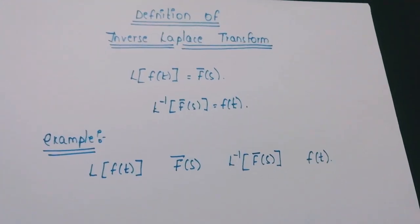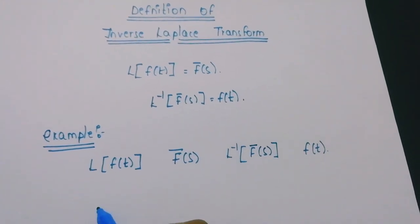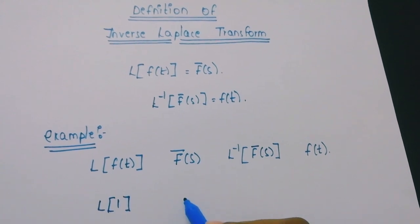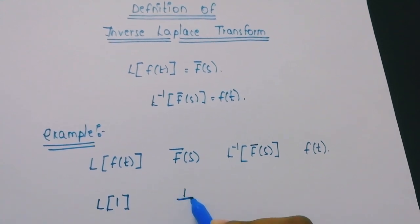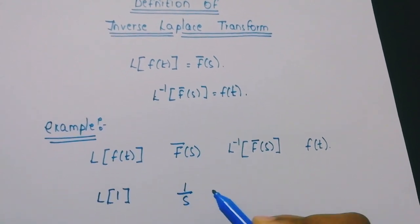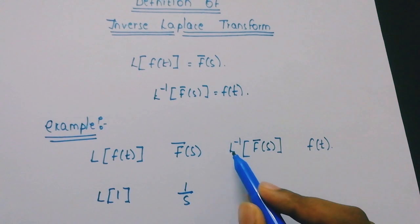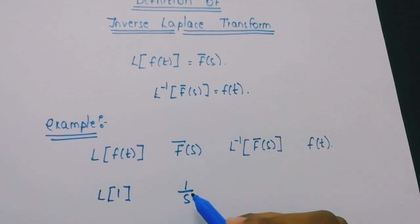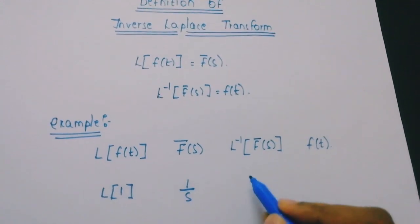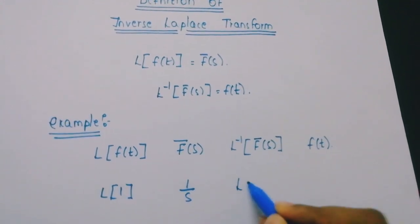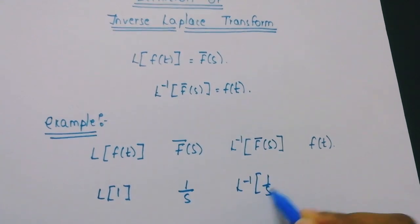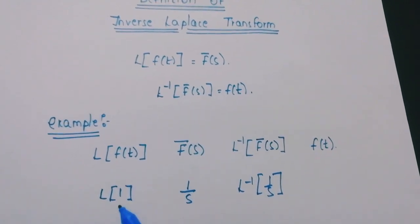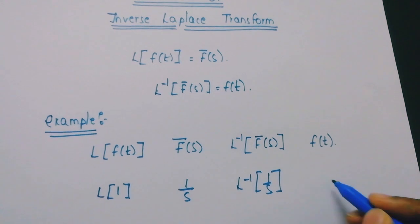For example, we know that the Laplace of 1 is 1 by s. So here we apply inverse Laplace to f bar of s, where f bar of s is 1 by s. So the answer will be f of t, and here f of t value is 1.